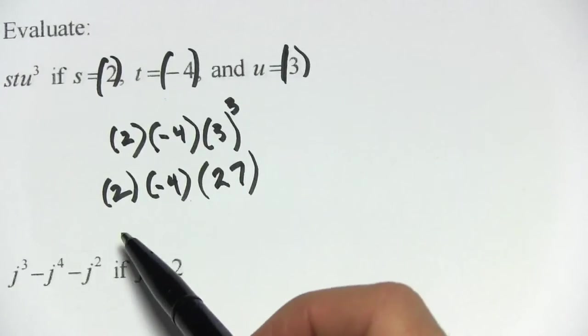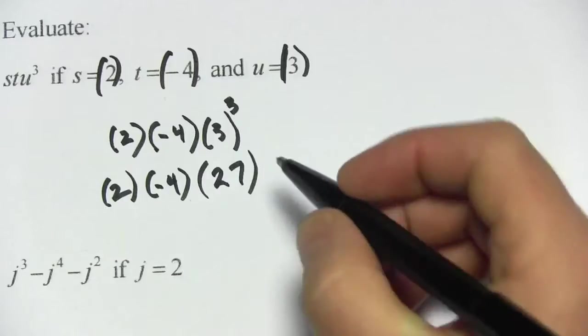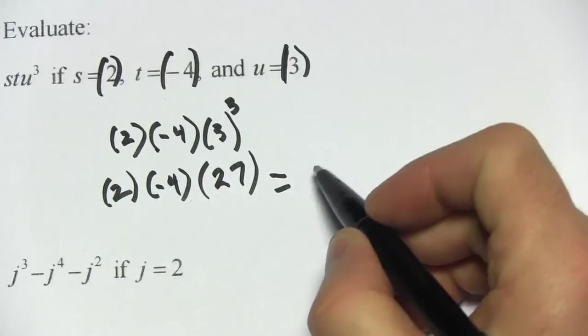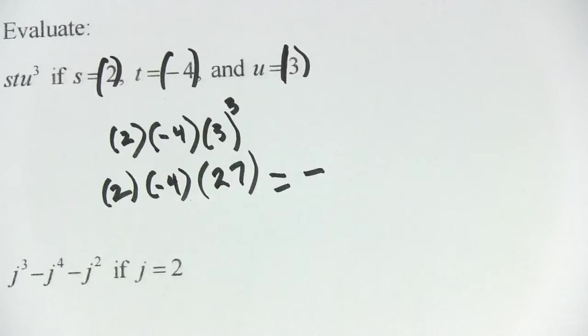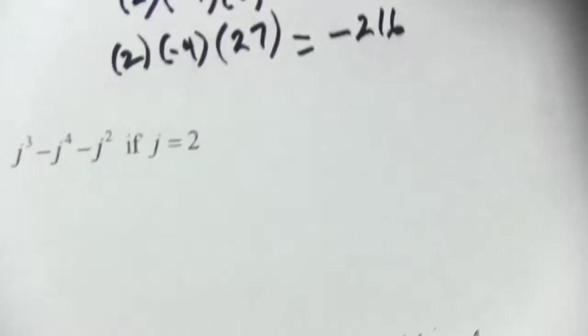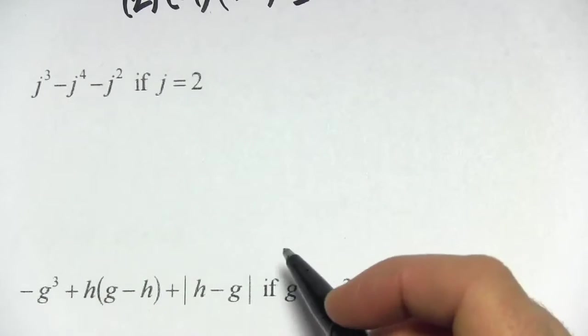At this point I'd probably just grab a calculator and multiply 2 times negative 4 times 27. Because there's one negative sign in this multiplication problem, I know the answer is going to be a negative number, and I think that comes out to be negative 216.